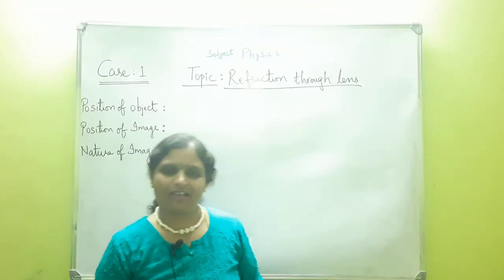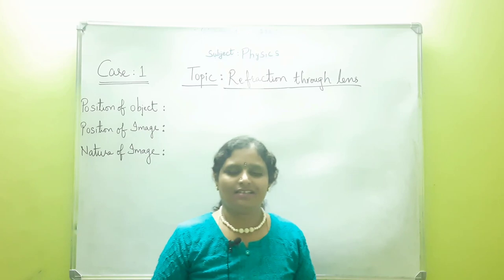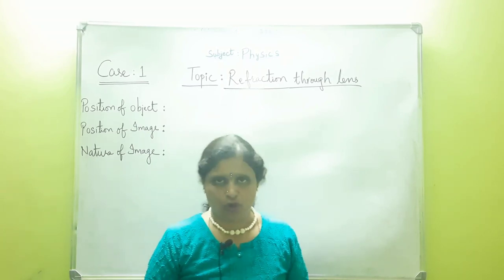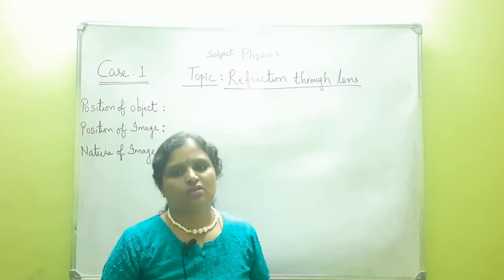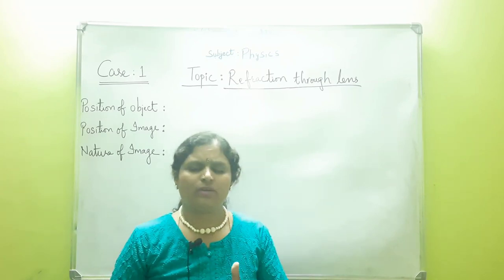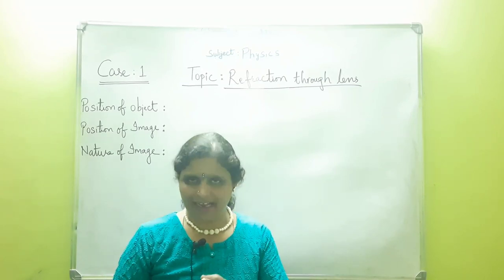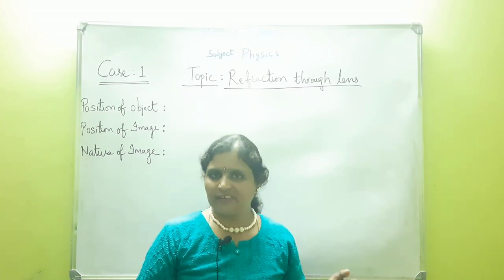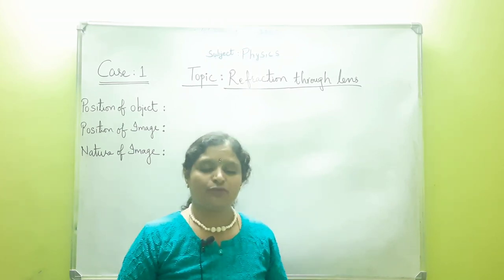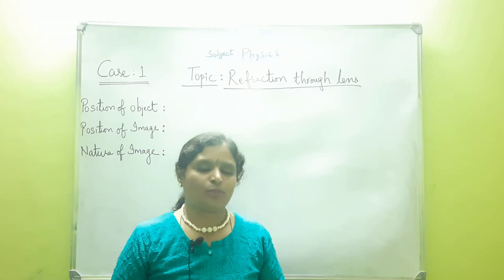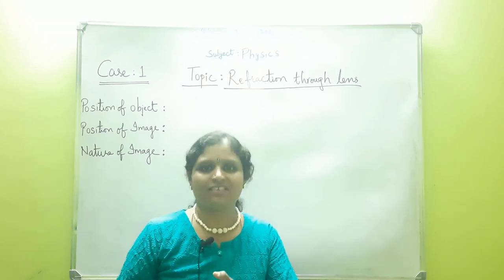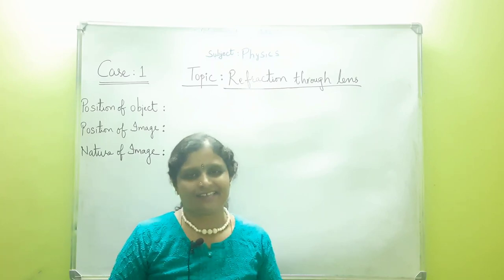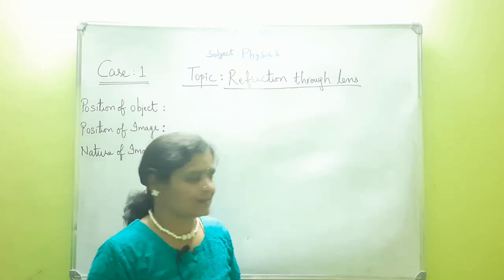Hello students, welcome back to my channel. In today's video, let us study about the six cases of a convex lens. Basically, when we place the object — that is the candle — in front of the convex lens, we are able to observe the images. The image formation depends upon various positions of the object in front of the convex lens.